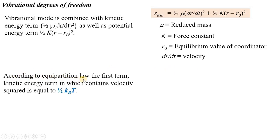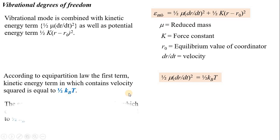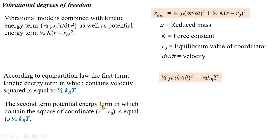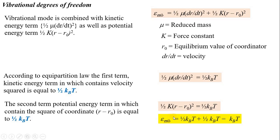According to the equipartition law, the first term (kinetic energy), which contains the velocity squared, is equal to ½ k_B T. The second term (potential energy), which contains the square of the coordinate, is also equal to ½ k_B T. So the total vibrational energy is ½ k_B T + ½ k_B T = k_B T per vibrational mode.